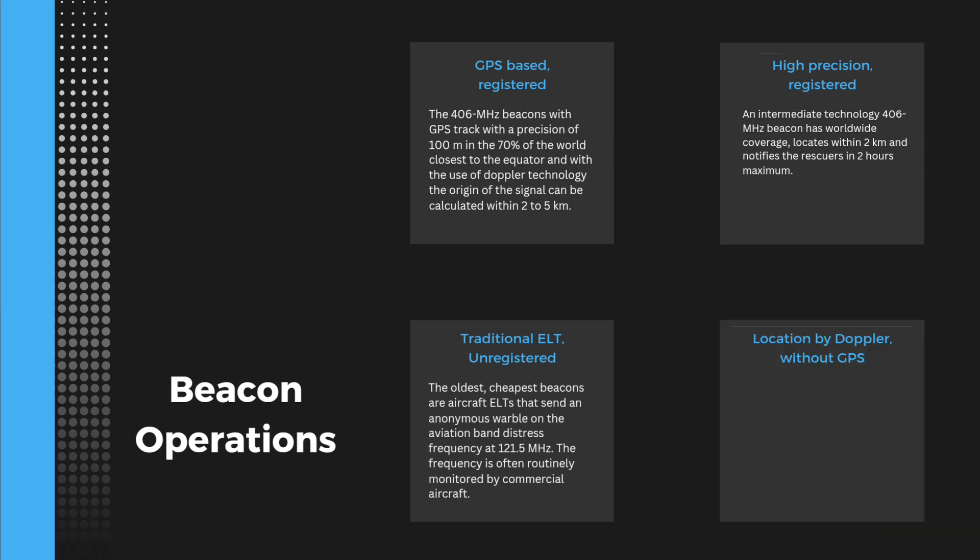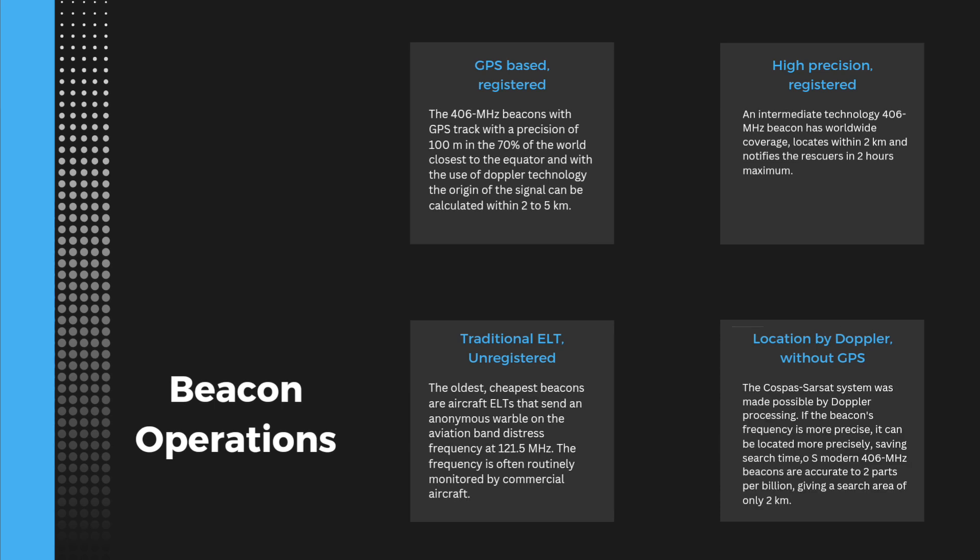And lastly, location by Doppler processing was made possible by the Cospas-Sarsat system, and it can locate more precisely, saving search time. The modern 406 MHz beacons are accurate to 2 parts per billion, giving a search area of only 2 km².